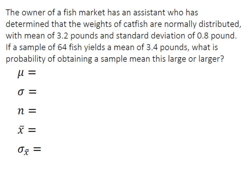First let's make sure that the central limit theorem applies. Remember we have to meet one of two conditions. We either have to have a normally distributed population or a sample size greater than or equal to 30. So in this case we have both. The weight of catfish are normally distributed and we have a sample of 64 fish. So we're good to go.